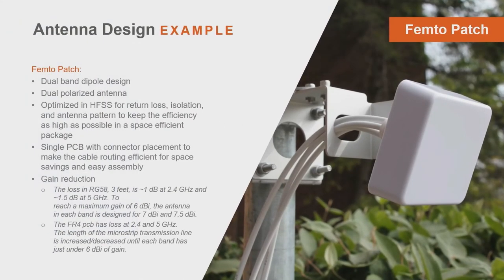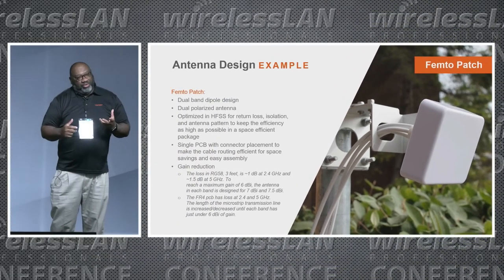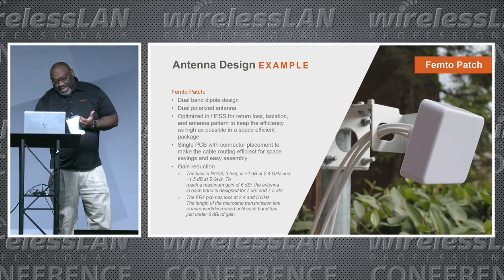Here's a design example: our femto patch antenna, 3.4 by 3.4 inches — a very small, compact design. We started with a dual-band, dual-polarized dipole, optimized in HFSS for return loss, isolation, and antenna pattern to keep efficiency as high as possible, with a single PCB radiator for manufacturability. We input the cable losses we calculated for the two and five gigahertz bands into the design, and also looked at losses across the FR4 board since we used FR4. Taking all of that, we go through and come up with an optimized solution.